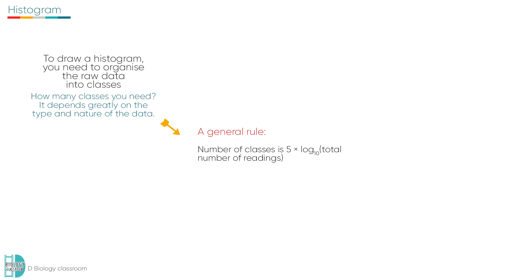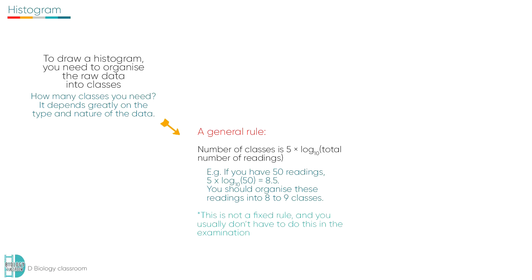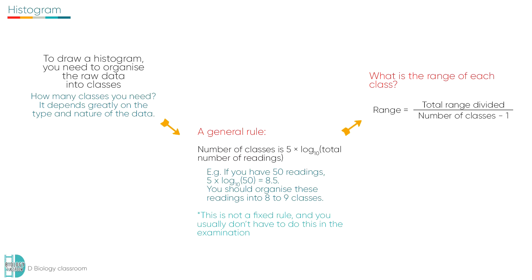The general rule for determining the number of classes is 5 times log₁₀ of the total number of readings. For example, if you have 50 readings, you will get 8.5, so 8 to 9 classes are appropriate. However, this is not a fixed rule, and you usually don't have to do this in the examination as the number of classes is already fixed for you. The range within each class is usually the total range divided by the number of classes minus 1, though you can always adjust it according to the data you have.